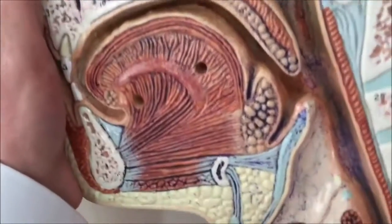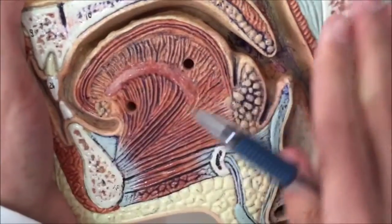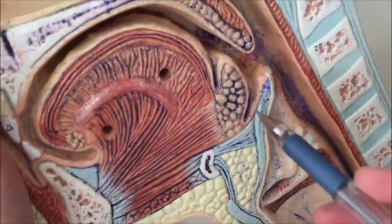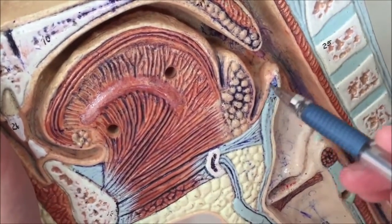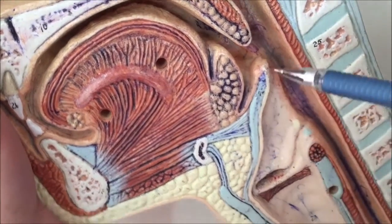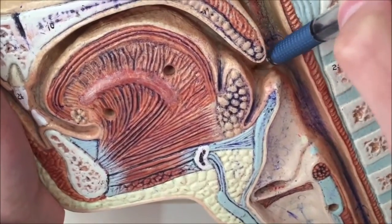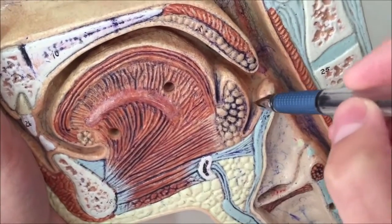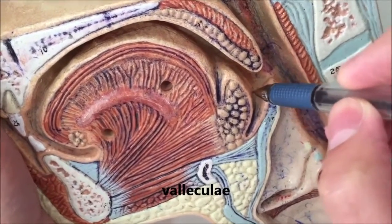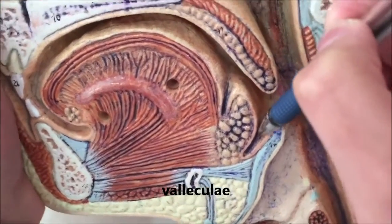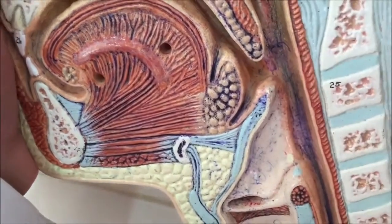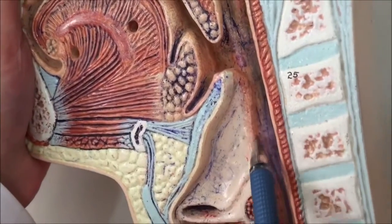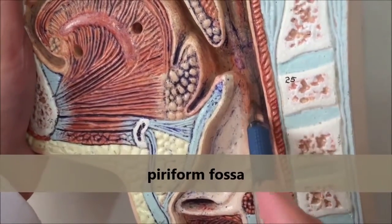This is a sagittal section, so the epiglottis has been cut in the midline. This is the median glossoepiglottic fold and this is the lateral glossoepiglottic fold. In between them there is a fossa called the vallecula. Posterior to the epiglottis we have the piriform fossa.